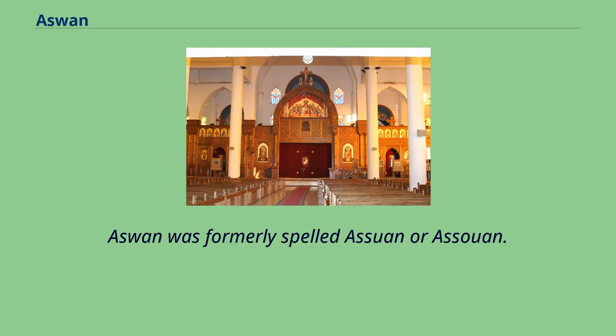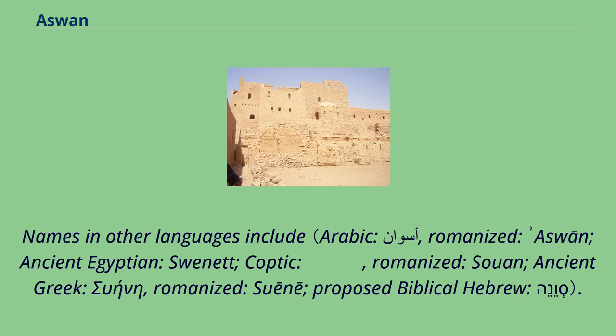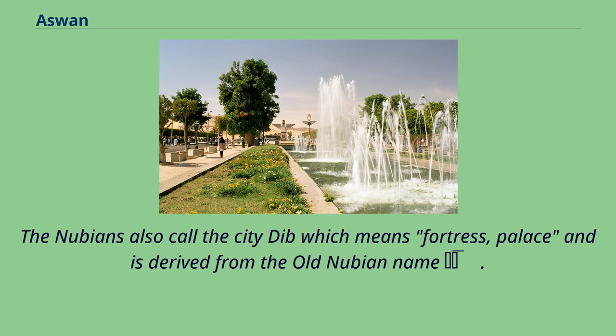Aswan was formerly spelled Aswan or Asawin. Names in other languages include the Nubian name Dib, which means fortress and palace, derived from the old Nubian name.